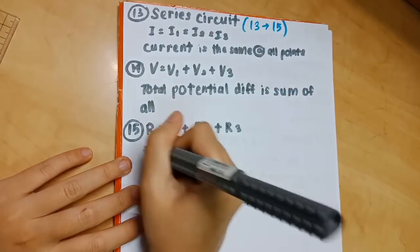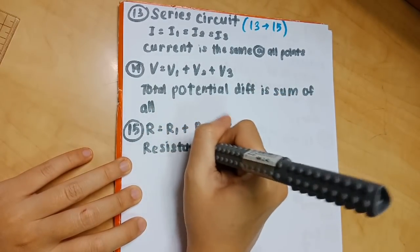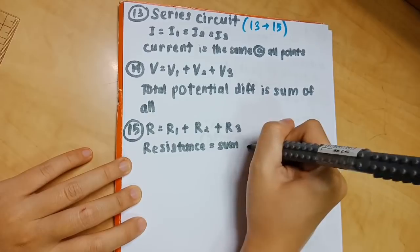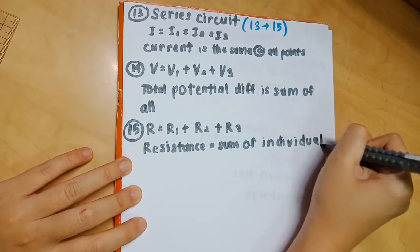Number 15: R equals R1 plus R2 plus R3. The total resistance in that circuit is the sum of all individual resistance.